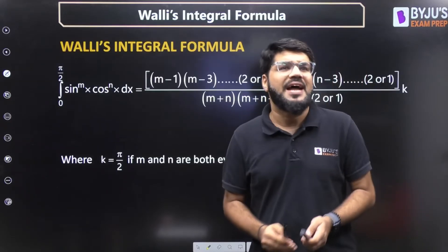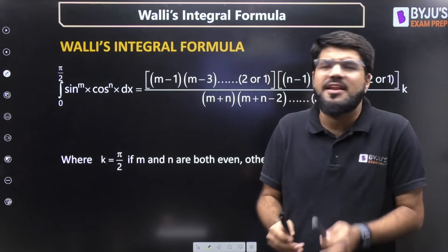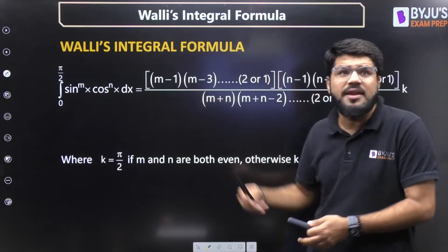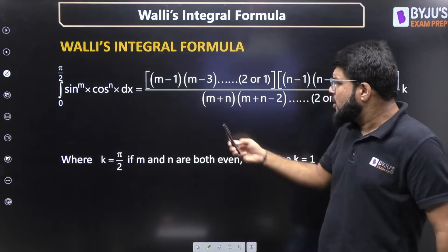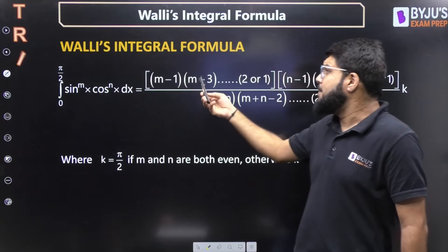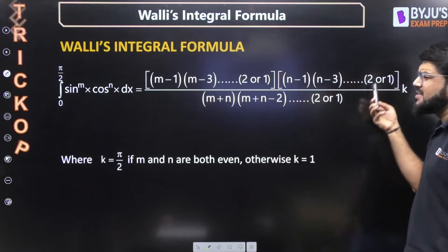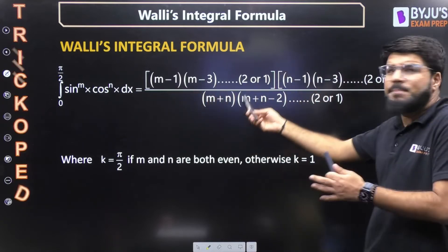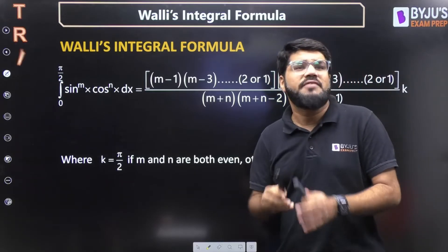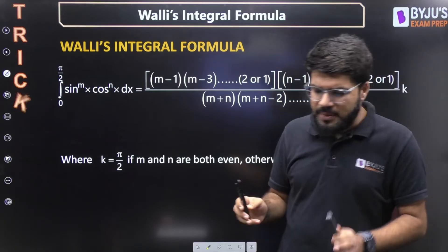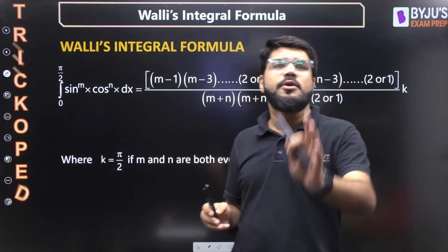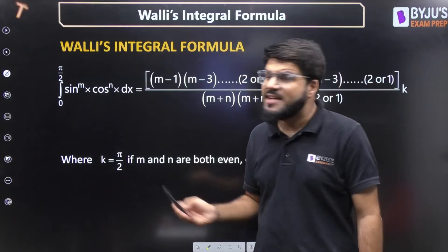What I have observed is that even Walli's integral formula students are not able to remember, and that is why I bring it into Trichopedia. Because it is of the form (m−1)(m−3)…, (n−1)(n−3)…, divided by (m+n)(m+n−2)…, I am going to give it a very simplified form by introducing the concept of double factorial.